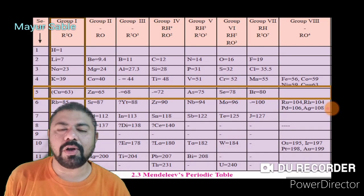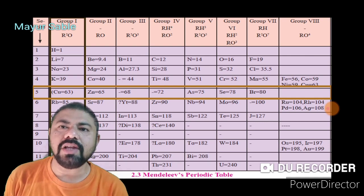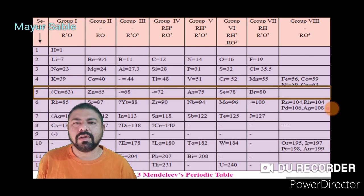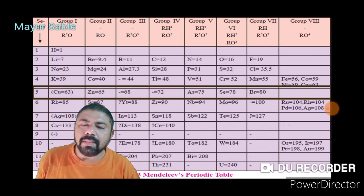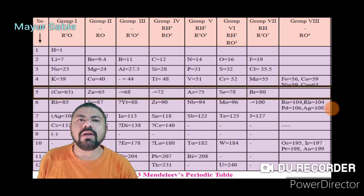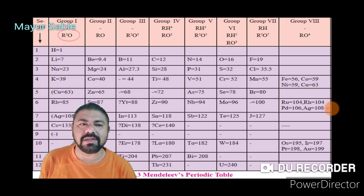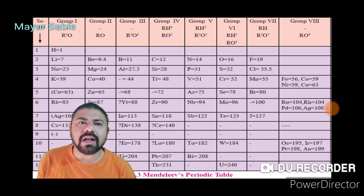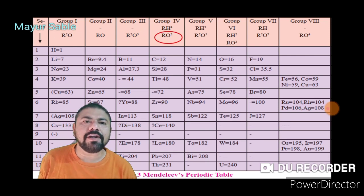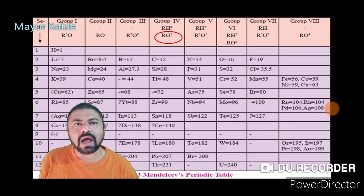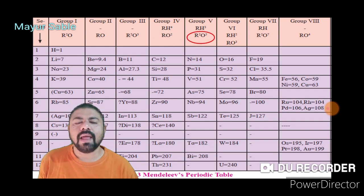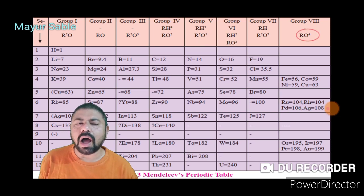In Mendeleev's periodic table, the vertical columns are called groups, whereas the horizontal rows are called periods. Elements are fitted into these periods and groups. There are seven groups in the periodic table, named Group 1, Group 2, Group 3, Group 4, Group 5, and so on.